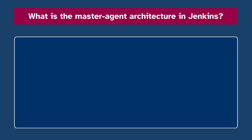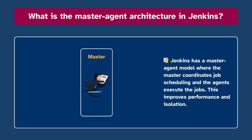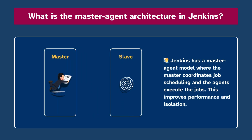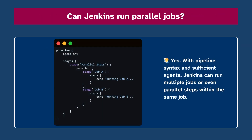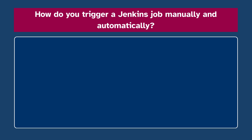Number twenty: Jenkins has a master-agent model where the master coordinates job scheduling and the agent executes the job. This improves performance and isolation. Number twenty-one: Can Jenkins run parallel jobs? Yes — with pipeline syntax and sufficient agents, Jenkins can run multiple jobs or even parallel steps within the same job.